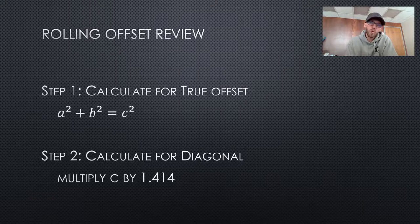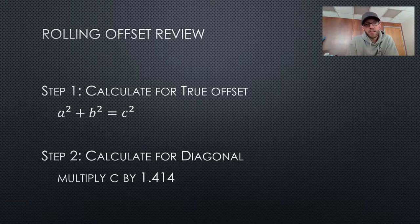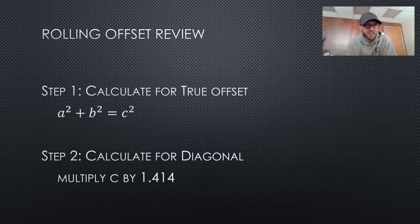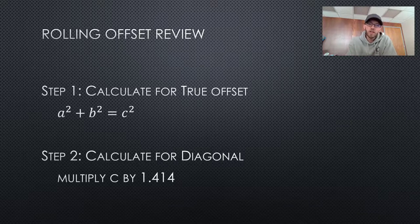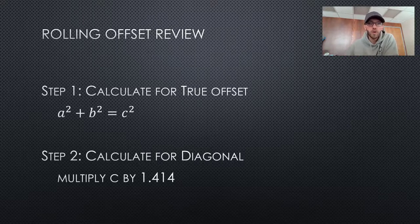Let's review. In order to create the number you need for a rolling offset, you must go through these two steps. One, calculate for the true offset using A squared plus B squared equals C squared. Remember, A and B are the differences in height and the horizontal movement or offset. You've got to find those on the sheet. Once you have that, you take that number C and times it by 1.414 and you'll have what you need to do your roll.